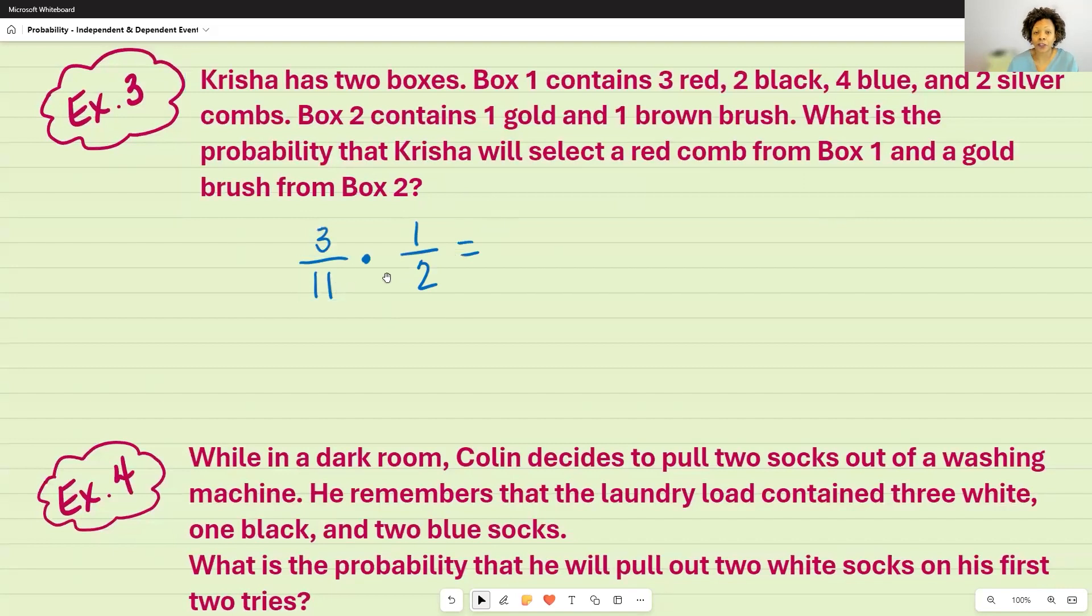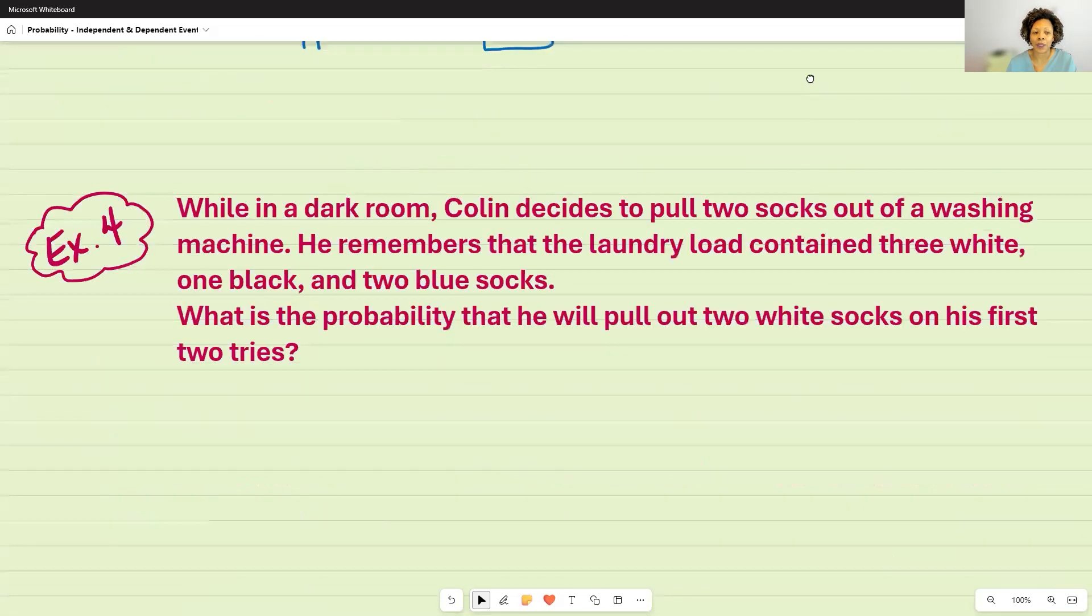In this case, three times one is three. 11 times two is 22. I cannot simplify this any further. And this would be an independent situation because it did not matter that I chose a comb out of the first box that had nothing to do with the brushes in the second box. So that was an independent situation.